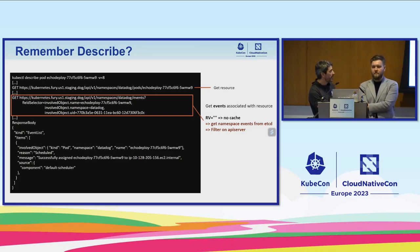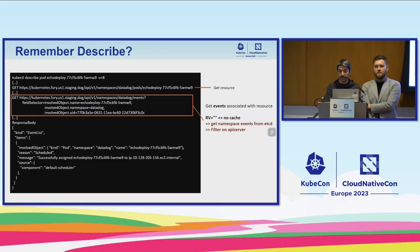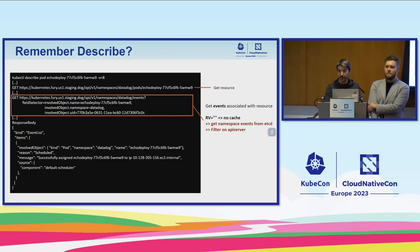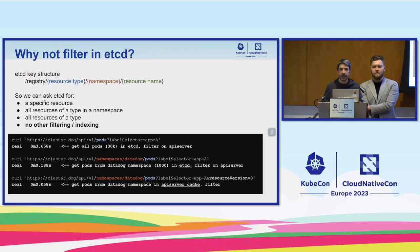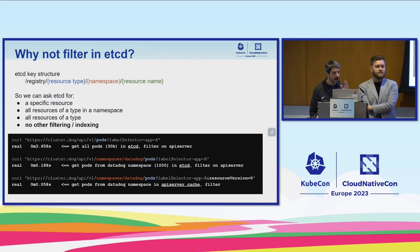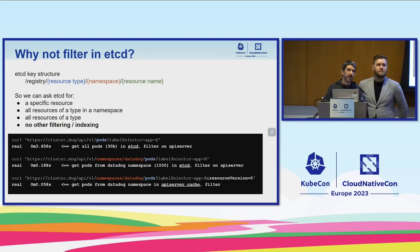Remember the describe example: the get events call is not setting a resource version, which means events are retrieved from etcd. The field selector is precise, targeting the specific pod's events. However, because of how filtering works, you get all the events from that namespace from etcd into the API server, and then apply filtering. For large namespaces or namespaces with many events, it's going to be pretty intense on etcd and API servers. The reason is how etcd is structured in Kubernetes: keys are organized by resource type, namespace, and resource name. You can ask etcd for a specific resource, all resources in a namespace, or all resources of a given type — but all other types of filtering happen in the API server.